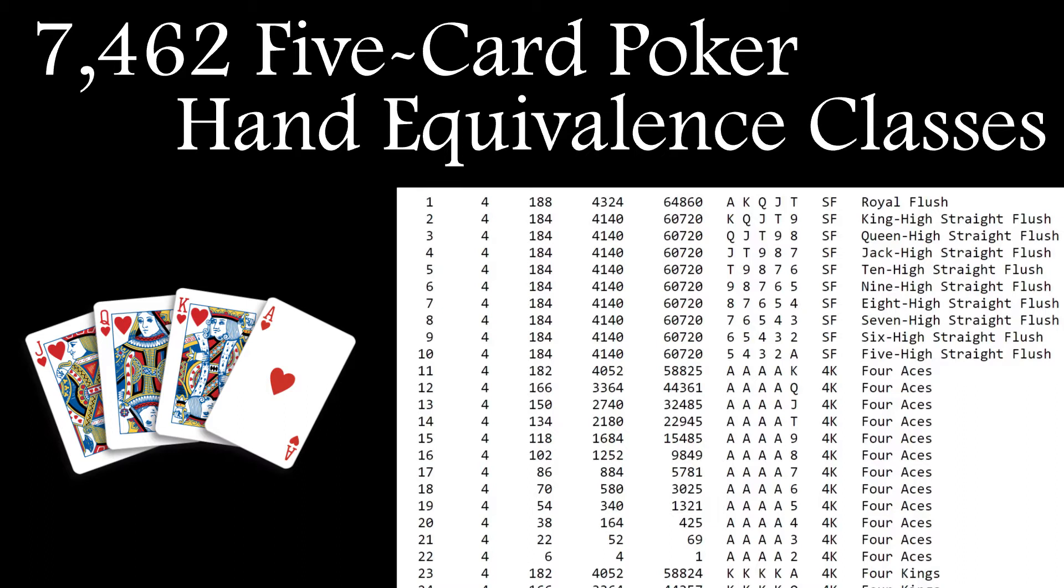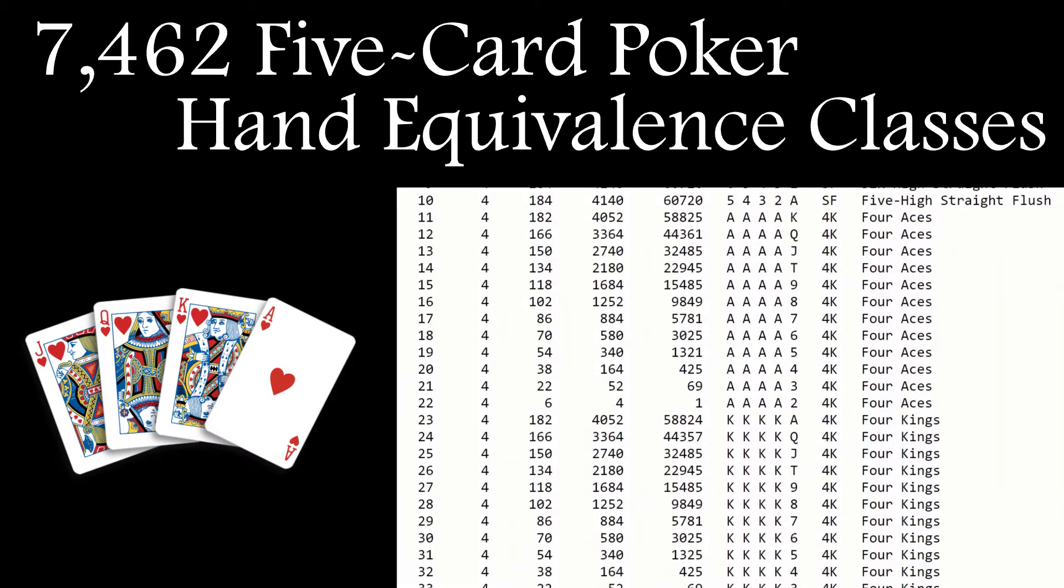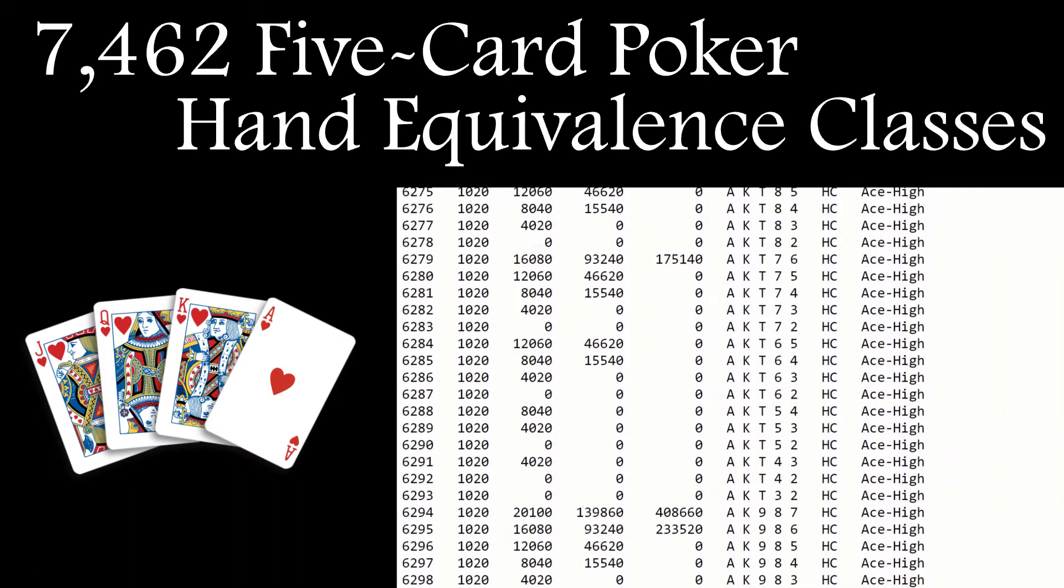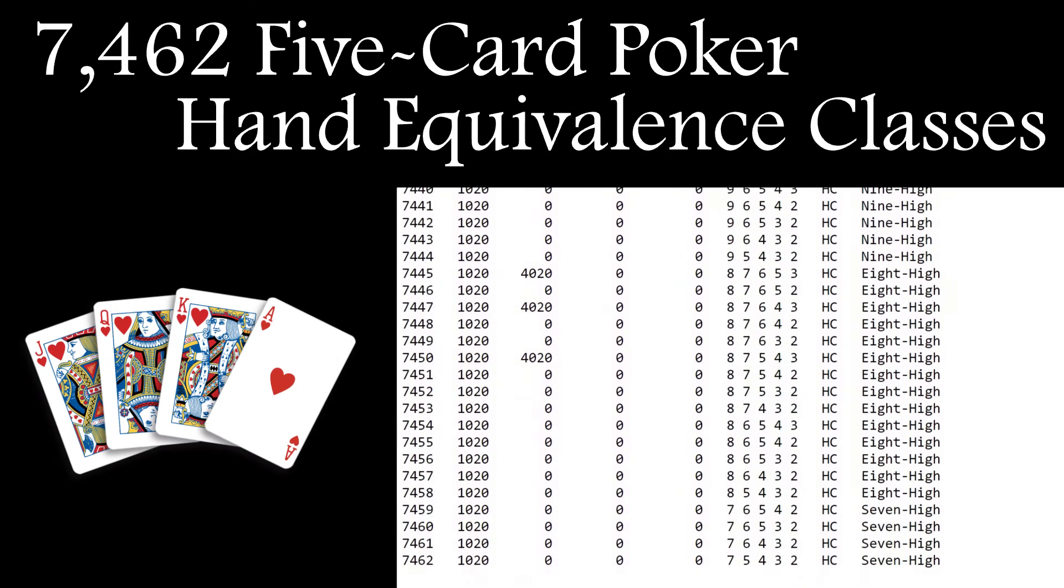You can download a table with all of them listed out and the best hand rank of a royal flush at number 1 all the way down to an unsuited high card at the bottom of the list. You'll need this list to continue so I'll add a link in the description.